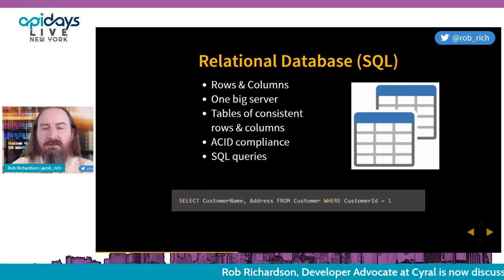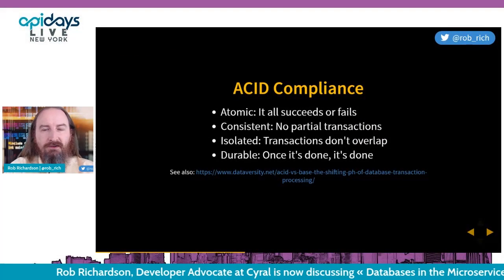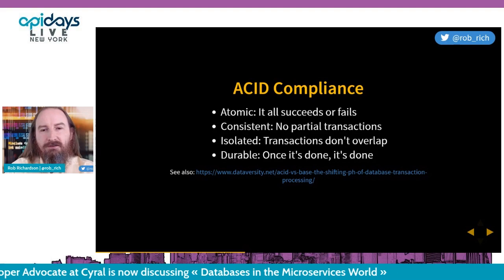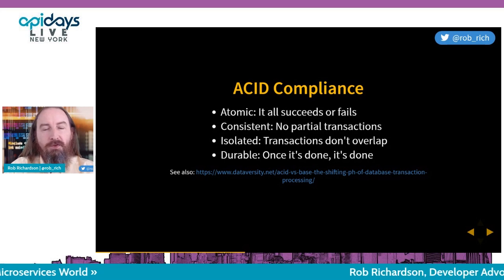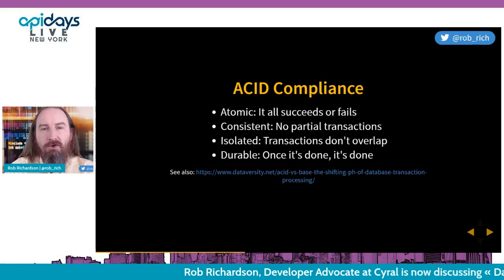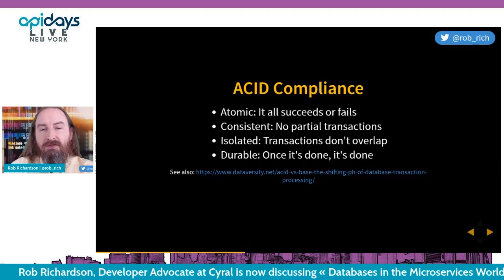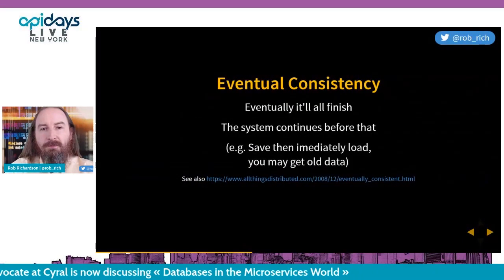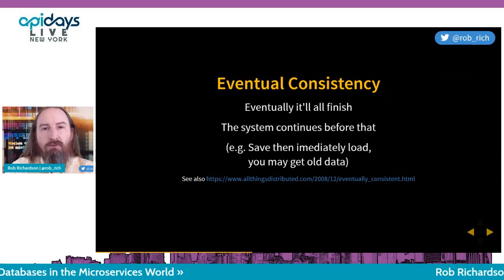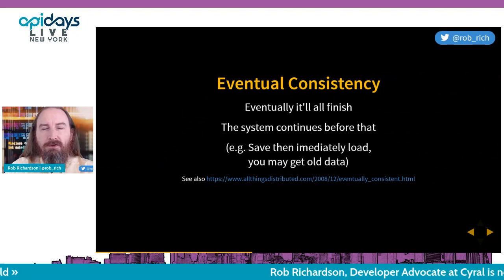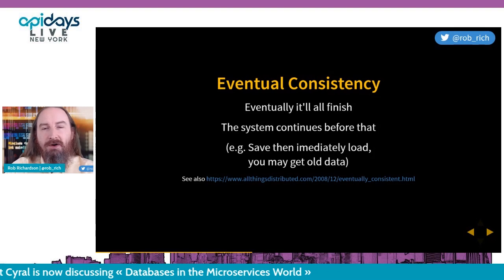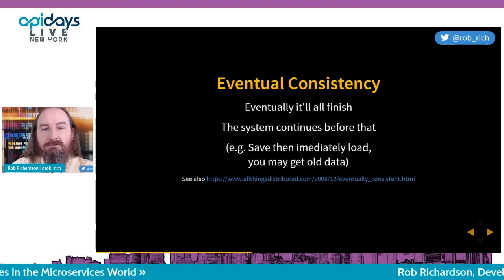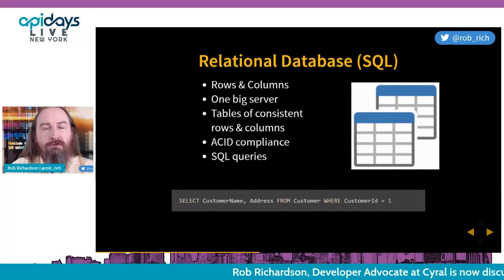Next, we have ACID compliance. Atomic — it all succeeds or fails. Consistent — no partial transactions. Isolated — transactions don't overlap. And Durable — once it's done, it's done. With ACID compliance, the entire set either succeeds or fails together; we won't get a partial transaction. By comparison, eventual consistency means it'll all finish eventually, but if we write and then immediately read we may not get the right answer. For example, if I buy something at Starbucks and immediately check my statement, I probably won't see that charge — but by end of month my credit card statement shows all the trips. It is eventually consistent. In SQL, we have ACID compliance — as soon as we finish writing, we can read and we're good.